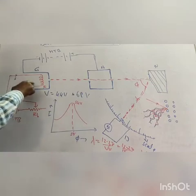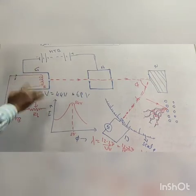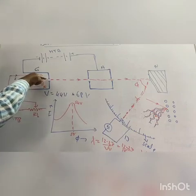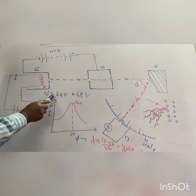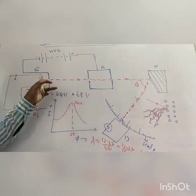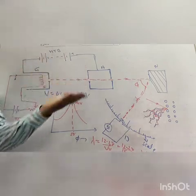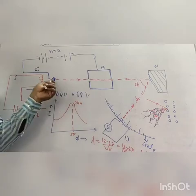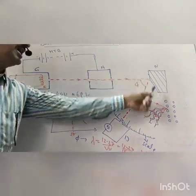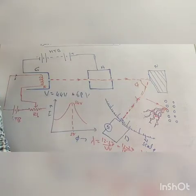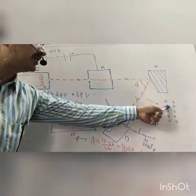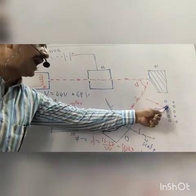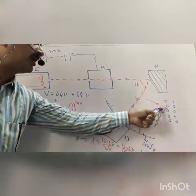When the filament is heated, electrons are emitted by thermionic emission. Through the hole, the electrons form a convergent beam. The electron beam is incident on the nickel crystal. The electron beam scatters at different angles from the crystal atoms.